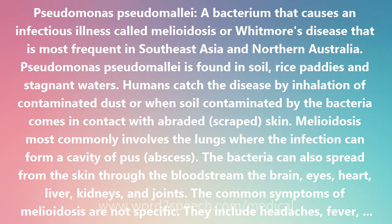Melioidosis most commonly involves the lungs, where the infection can form a cavity of pus — an abscess. The bacteria can also spread from the skin through the bloodstream to the brain, eyes, heart, liver, kidneys, and joints.